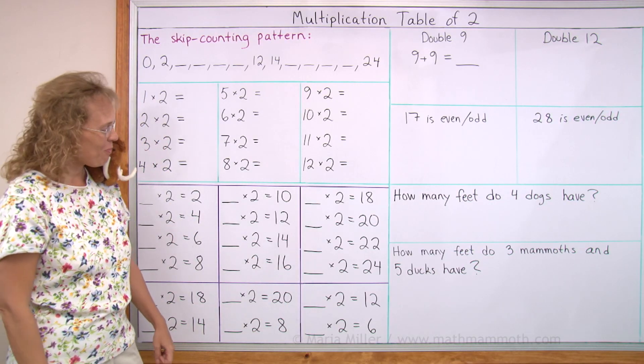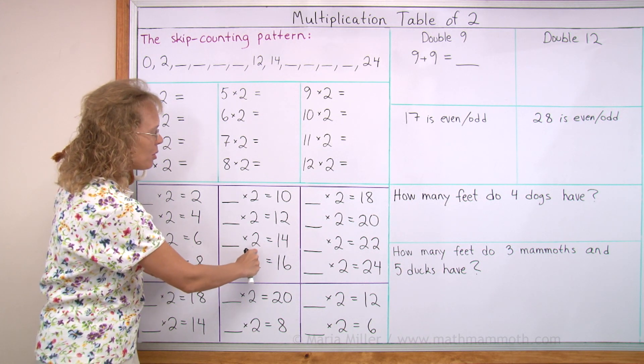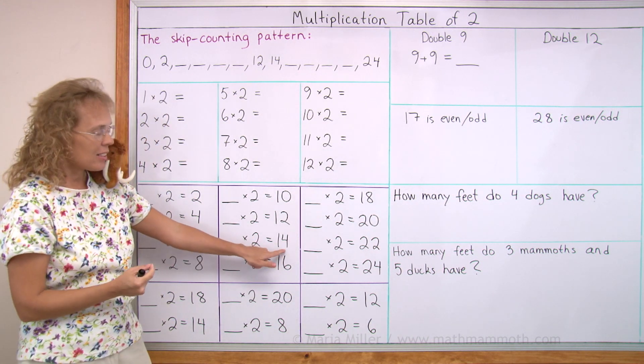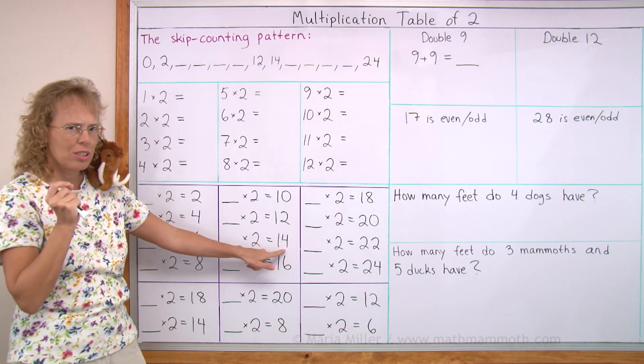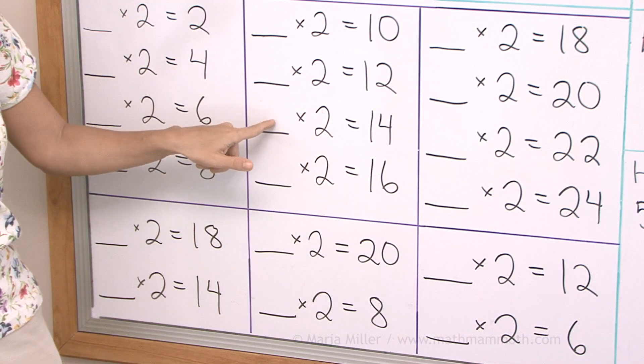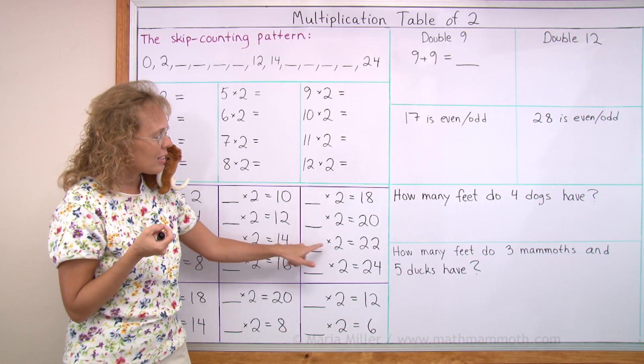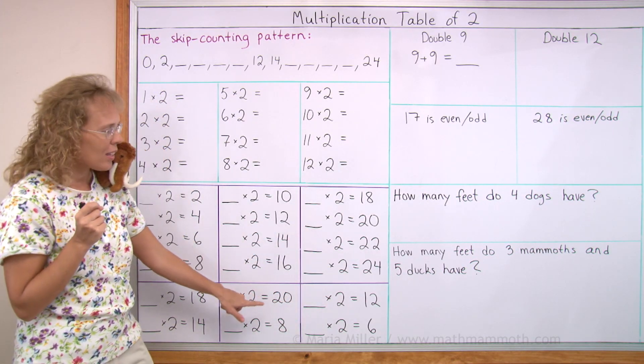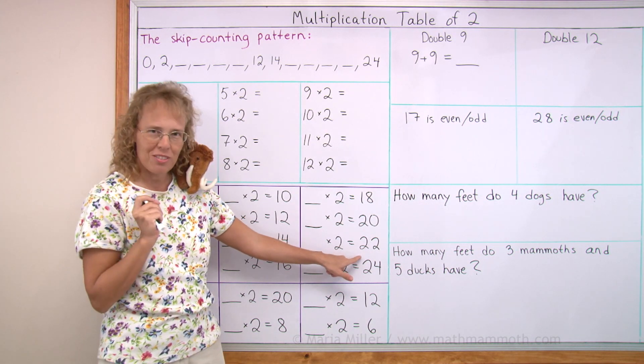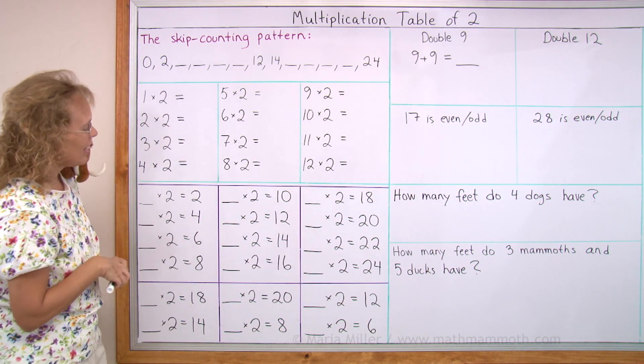So that's easy, right? And you can think backwards. How many times two makes 14? This is double something. 14 is double something. Double what? It's double seven. Seven goes there. Or what times two is 22? What is 22 double of? It's 11, double 11. So 11 goes there.